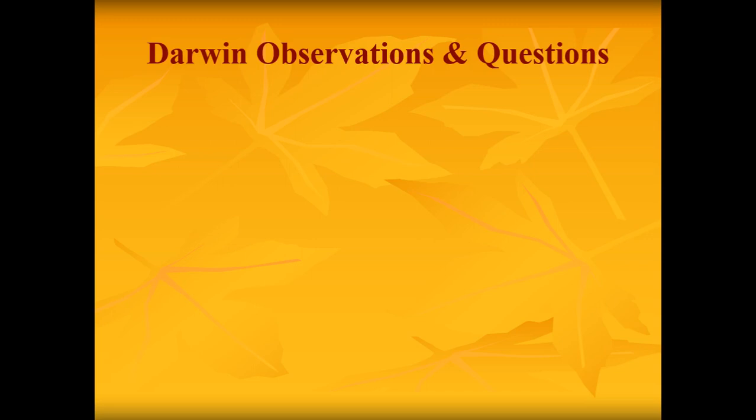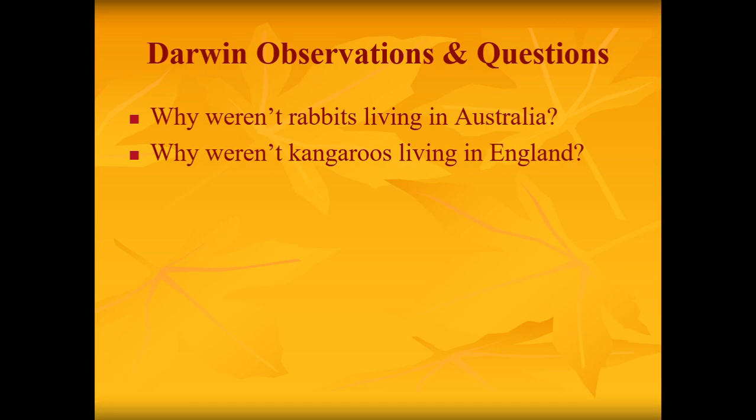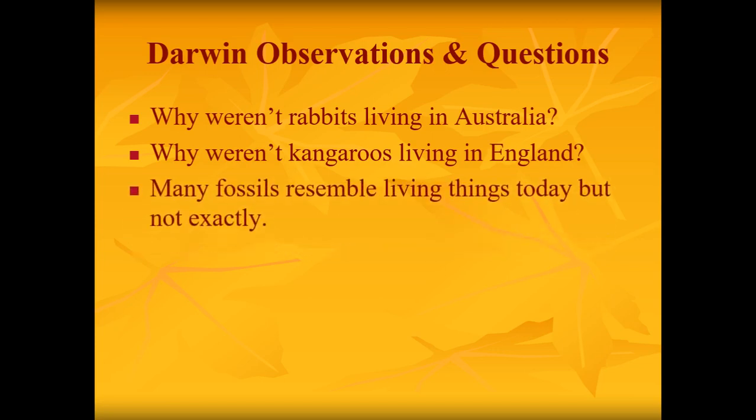So Darwin, when he went on this five-year journey on that little ship, the observations he made and questions he had were many. When he went through Australia, he noticed there were no rabbits living there — there are rabbits living there now, but at that point there were none. He also saw lots of kangaroos there, but he wondered why there are no kangaroos living in England. He also noticed that many fossils resemble living things today, but not exactly the same — they somehow have changed.